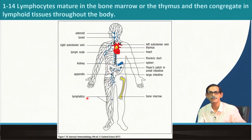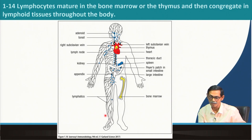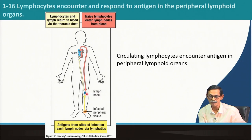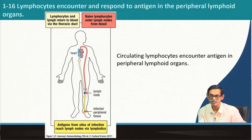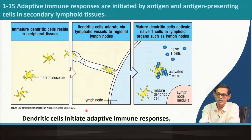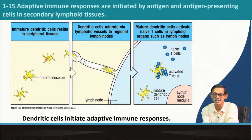We already know that lymph nodes are spread all over the body. Here in this case, the foot is the site of infection — it can happen in any part. As a result of innate immunity, the infectious organism is processed and brought to the nearest lymph node region. From there it goes into the circulatory system, goes to the heart, and is then circulated all over the body.